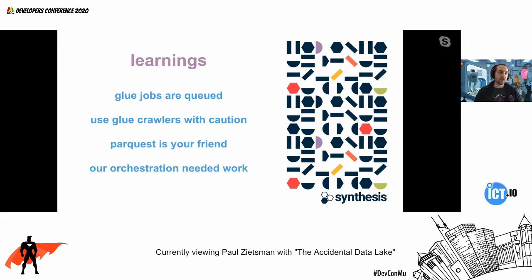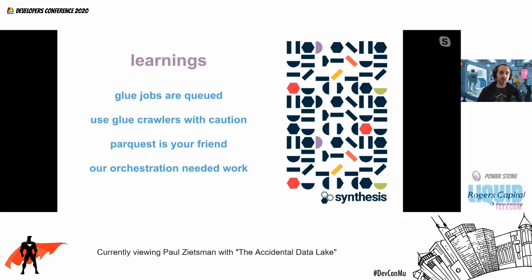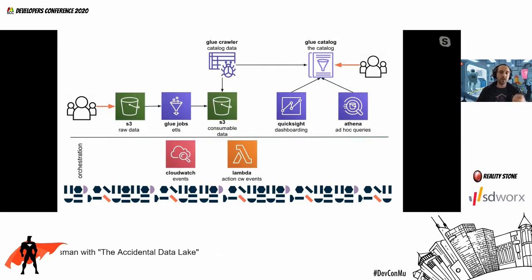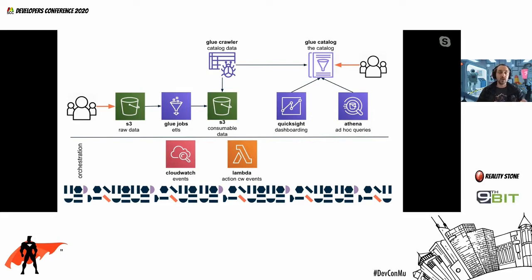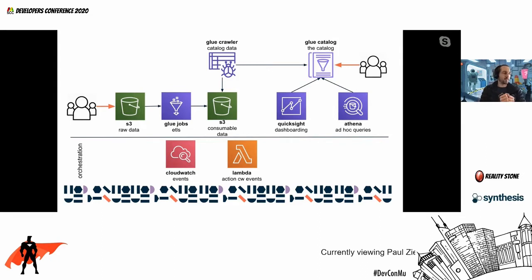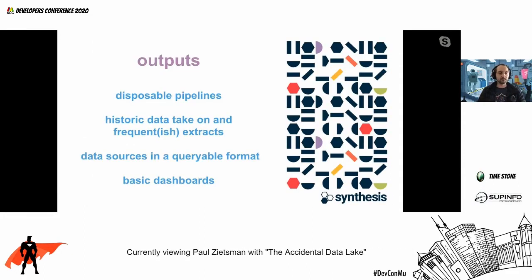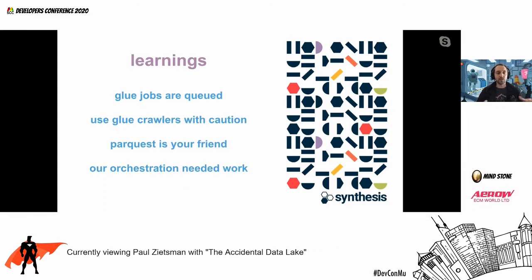Our orchestration was not ideal. Like I mentioned, we couldn't use Step Functions and we didn't have Airflow. So we kind of hooked these events together using CloudWatch events and Lambdas. And it made it quite tricky — if a file dropped in your raw location and it had to go through some ETLs and then end up in a final destination, if you didn't know the system quite well, it was tricky to figure out where in the process your file was.